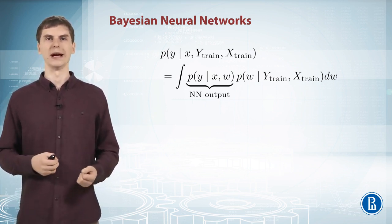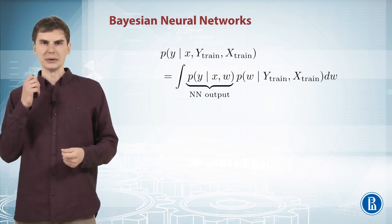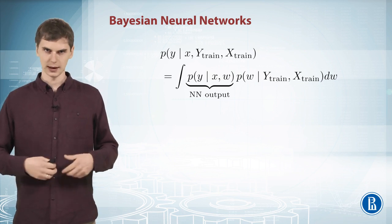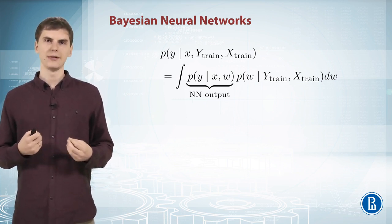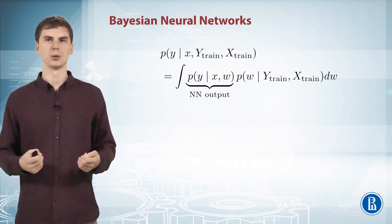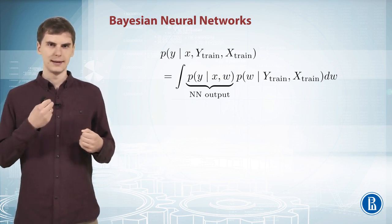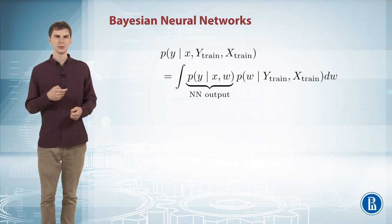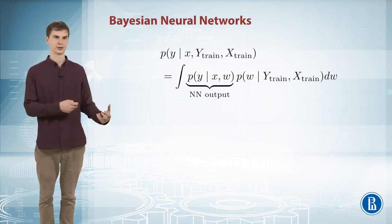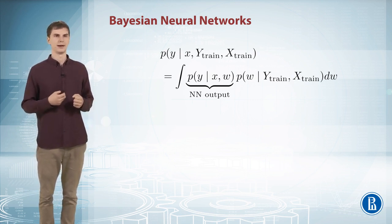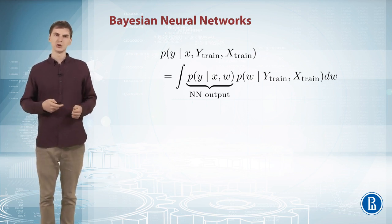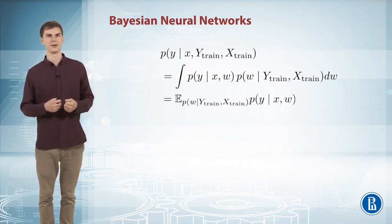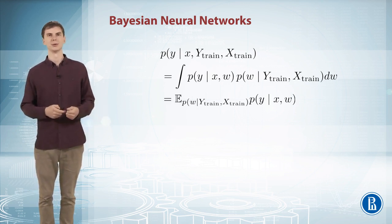And then you average all these predictions with weights where weights are the posterior distribution on w, which basically says us how probable is that this particular w was according to the training dataset. So you have kind of an infinitely large ensemble of neural networks with all possible weights and with basically importance being proportional to the posterior distribution of w. And this is full Bayesian inference applied to neural networks.